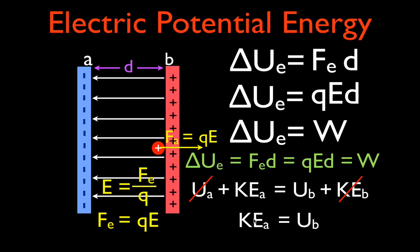We can calculate the velocity of a charge as it moves through an electric field between two parallel plates. To summarize: electric potential energy is very similar to gravitational potential energy. The change in potential energy equals the work you do — applying a force over a distance. For gravity it's MGH, but for electric potential energy through a uniform field between parallel plates, it's QE times D.